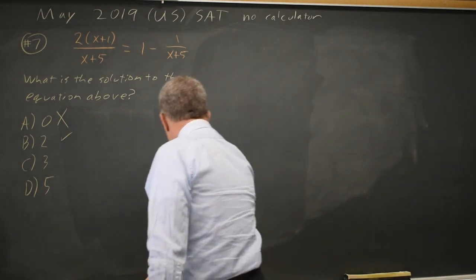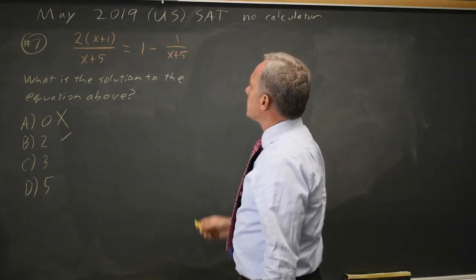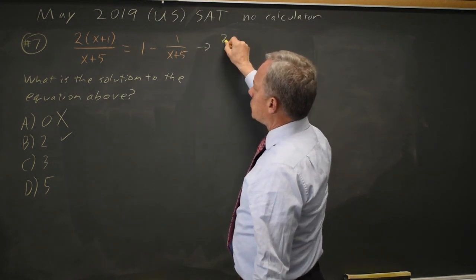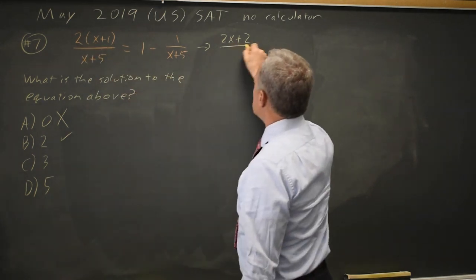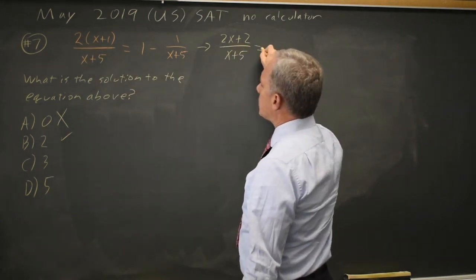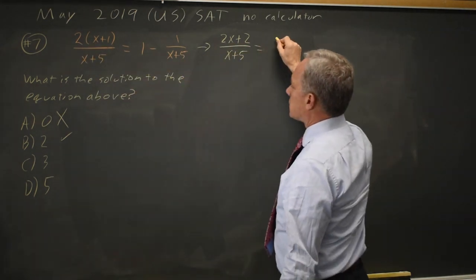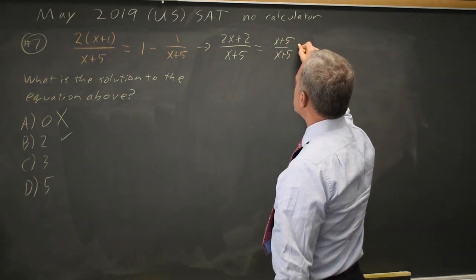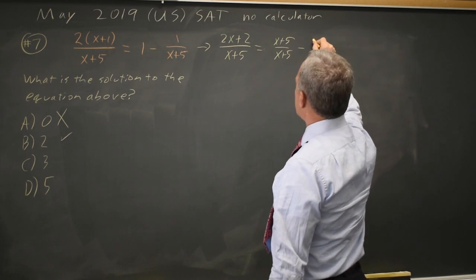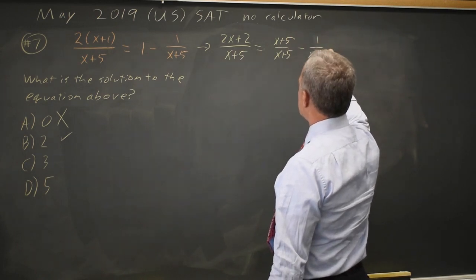Some of us don't like plugging in answers, so I'll do it algebraically. I'm going to get a common denominator. I have 2x plus 2, distributing the 2, over x plus 5 equals 1 is x plus 5 over x plus 5. And I have minus 1 over x plus 5.